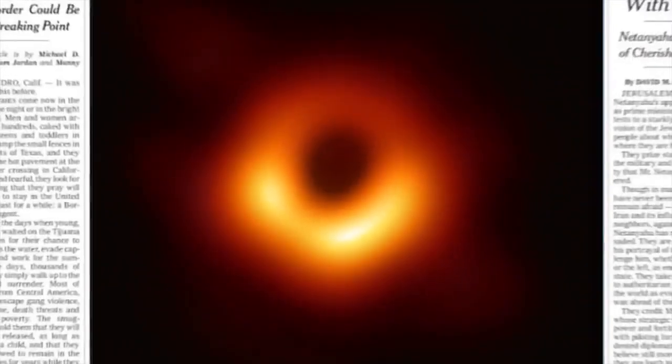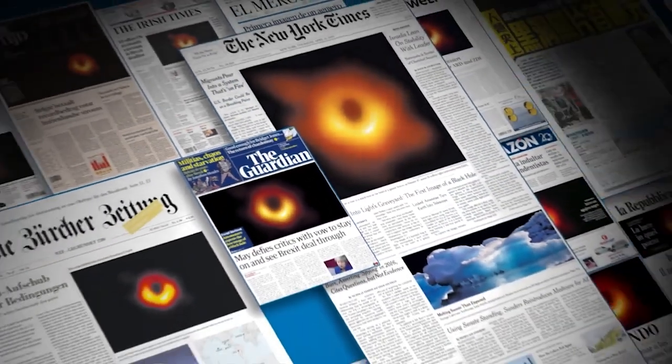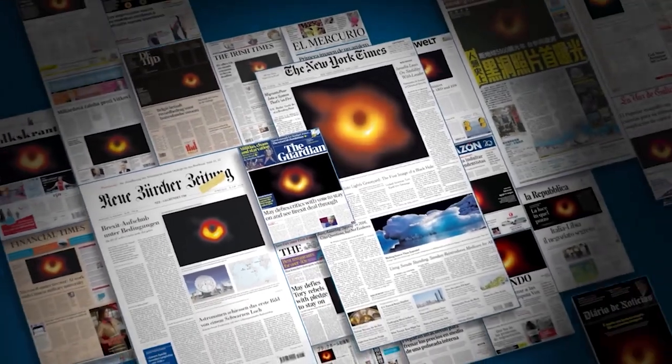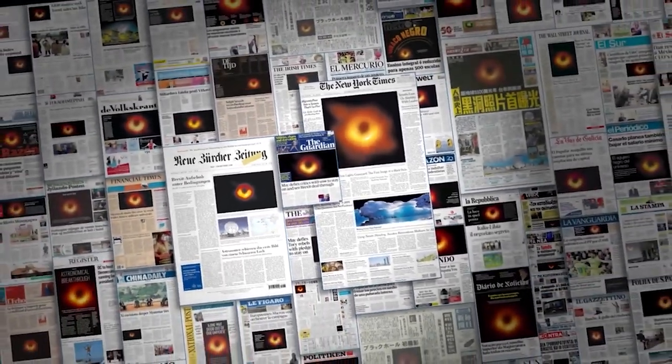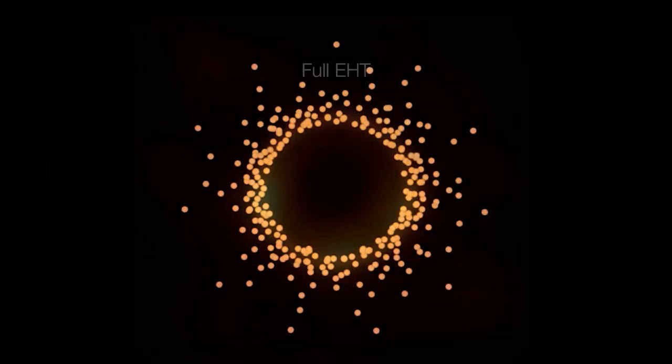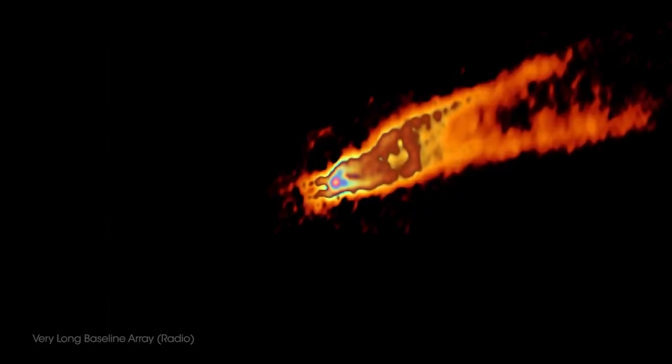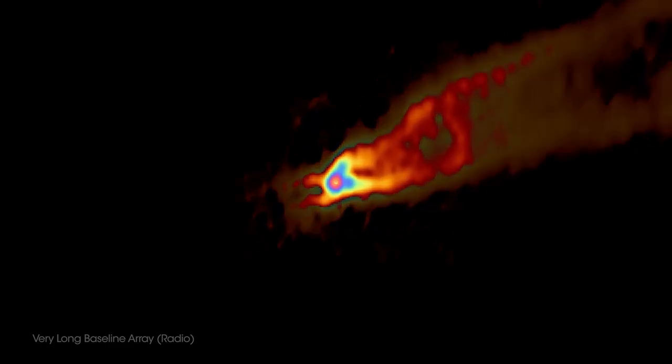The Event Horizon Telescope made headlines in 2019, when it successfully produced the first image of a black hole's event horizon, namely the black hole at the center of an active elliptical galaxy, Messier 87. The Event Horizon Telescope made observations of Sagittarius A star, the Milky Way's supermassive black hole, at the same time it obtained the data that generated that image.